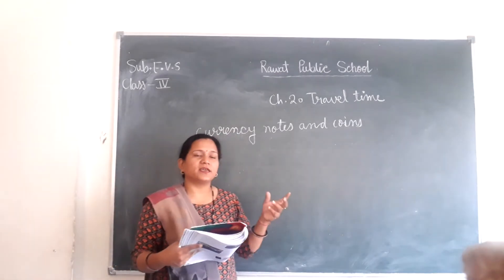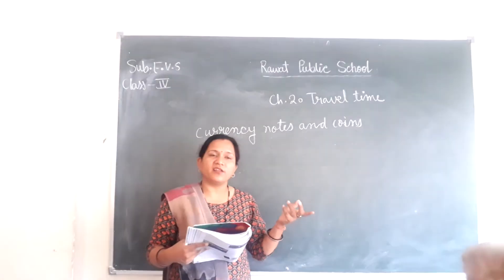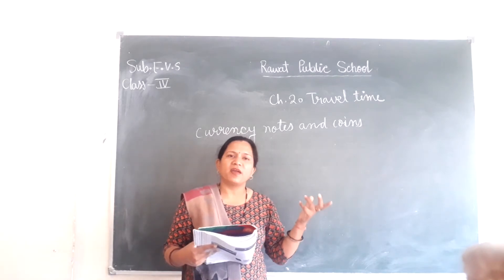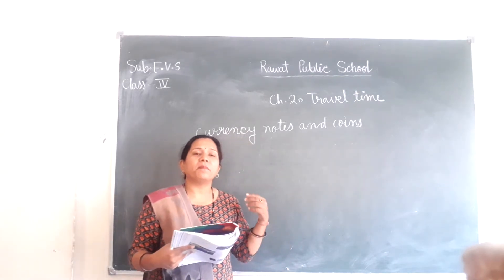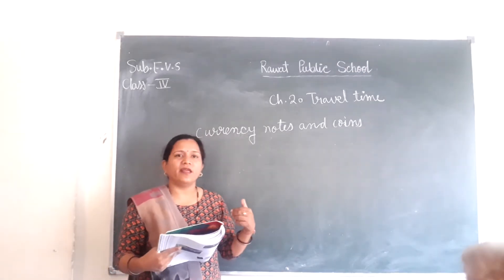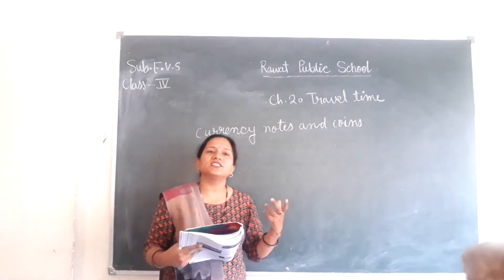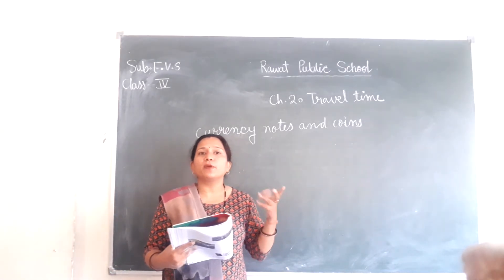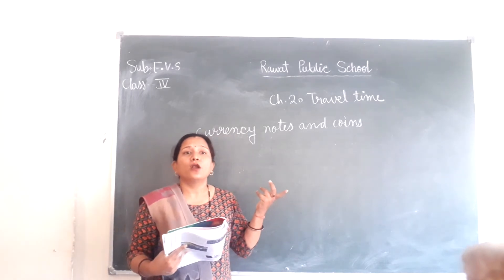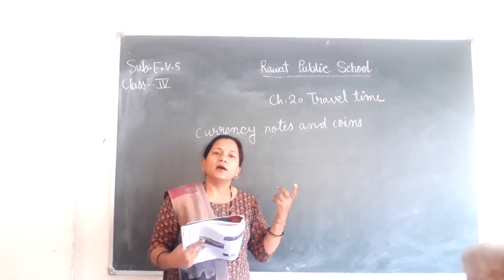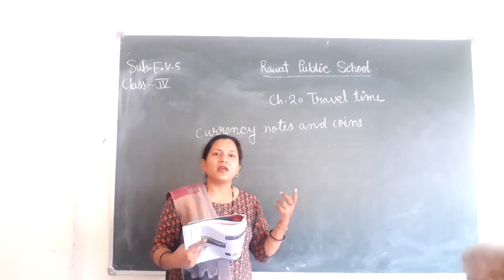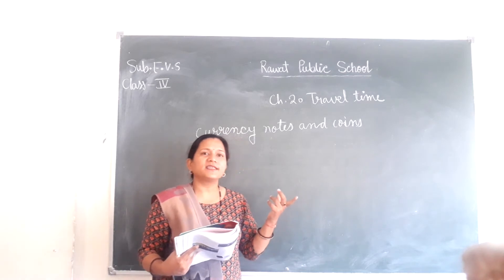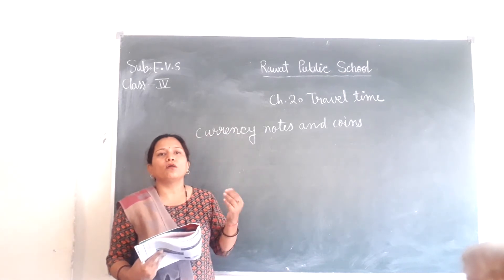Different countries have different currencies. Currency includes both notes, made up of paper, and coins, made up of metal. Different countries such as India, Japan, and America — every country has its own currency. For example, India uses the rupee. If you go to America, there is no rupee currency, so every country has its own currency and coins.